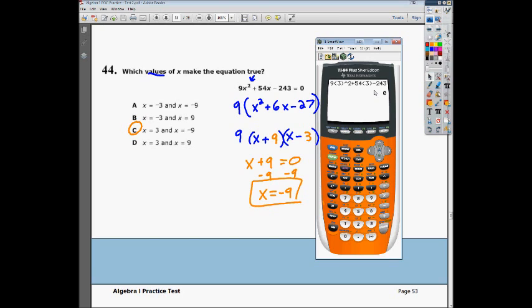Well, then I can plug in negative 9 and do the exact same thing. I can do 9 times negative 9 squared, plus 54 times negative 9, minus 243. Enter. And again, we got 0. So like I said, you can take these numbers, and you can just plug them in into this problem to make sure that you get out 0, and that's an easier way to do this.